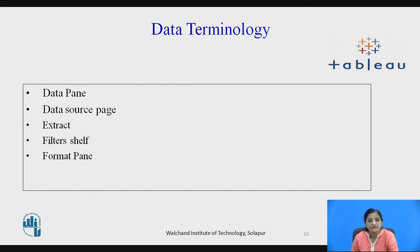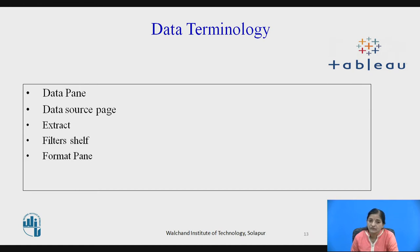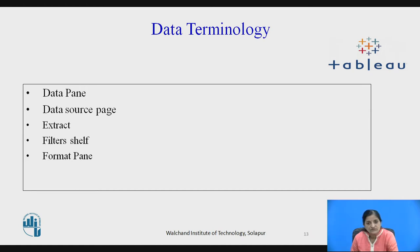Data pane occurs on the left side of the worksheet. This pane consists of the data fields of the data source connected to Tableau. All the data fields are listed and categorized as dimensions and measures. Dimensions and measures can be dragged and dropped onto various shelves to create views. The data pane also consists of customized fields such as newly calculated fields, groups, or binned fields.